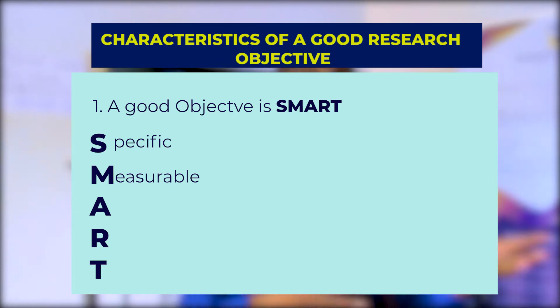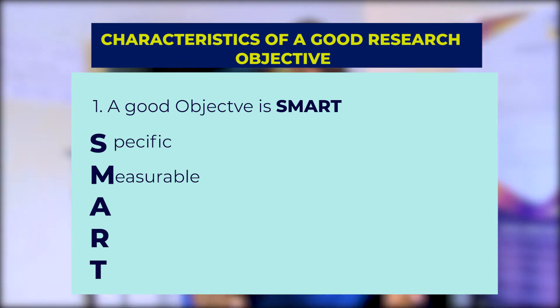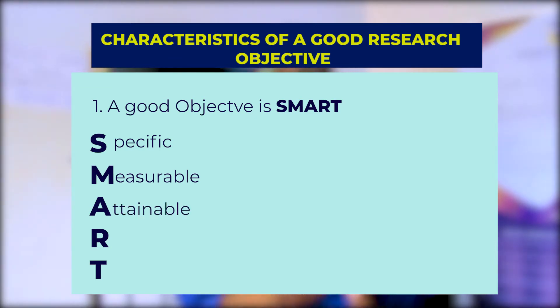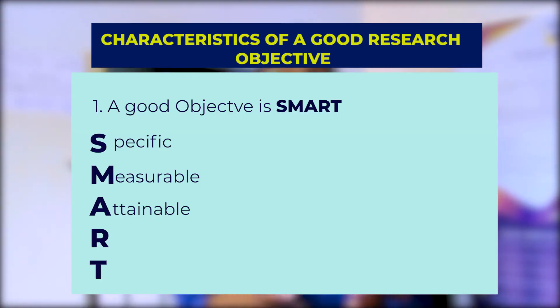Attainable means the objective must be feasible — you must be able to access the population, conduct the study with available resources and time, and ensure geographical accessibility. Relevant means the objective must relate directly to your study. For example, if you're studying remuneration, looking at the relationship between housing and performance may not be relevant because housing is not remuneration — it's a work facilitation.